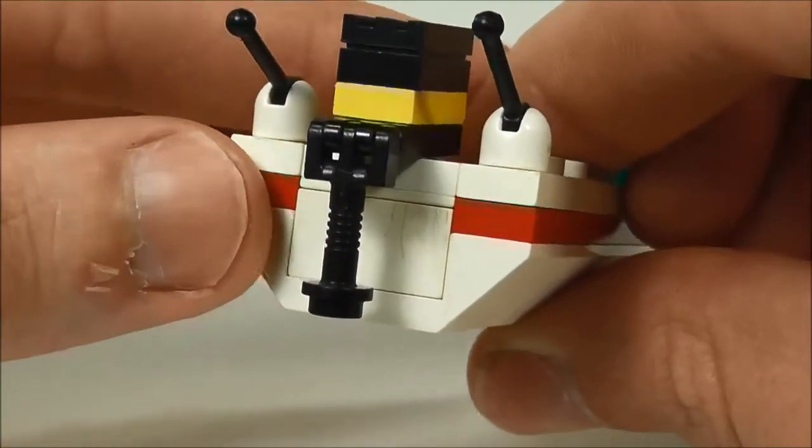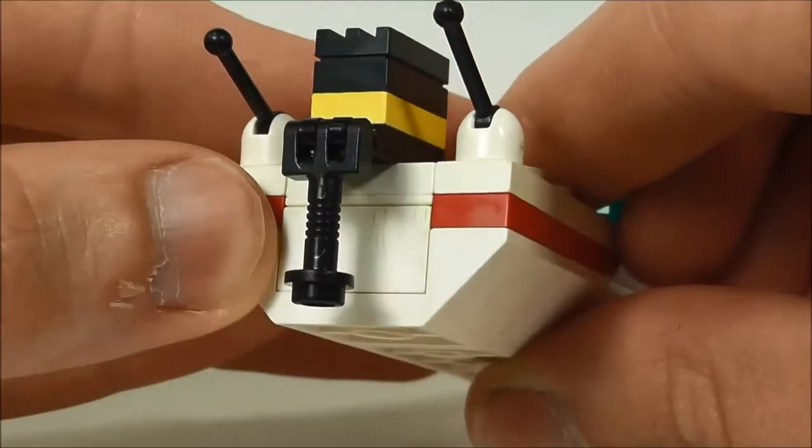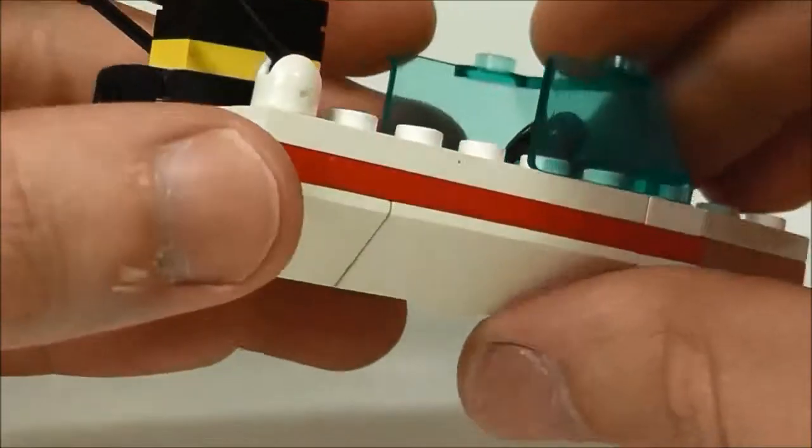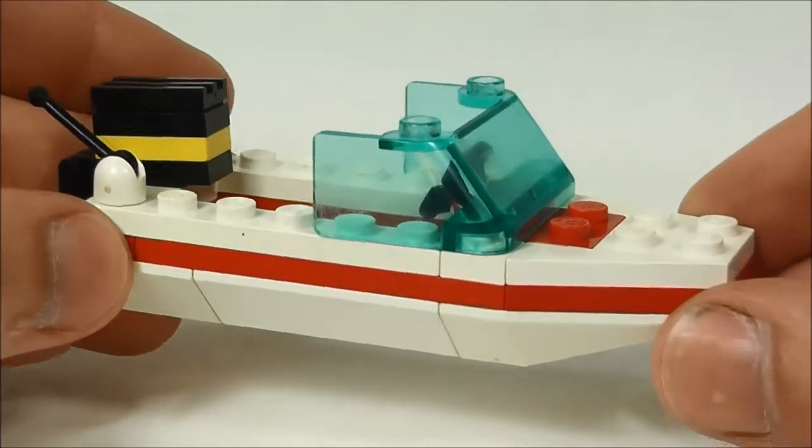But you can see some of these pieces are starting to get kind of aged especially that one in the back right there. Starting to yellow a little bit. It actually looks better on camera than it does in real life. But that's the way it is when you're dealing with these old Lego sets.